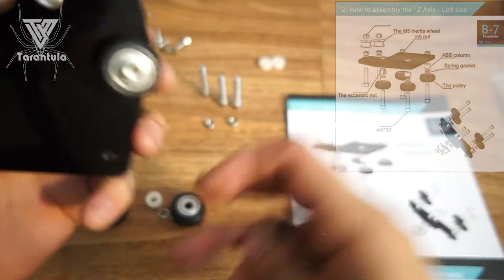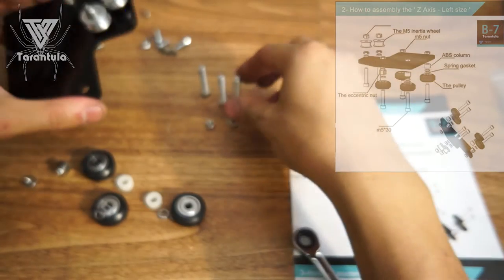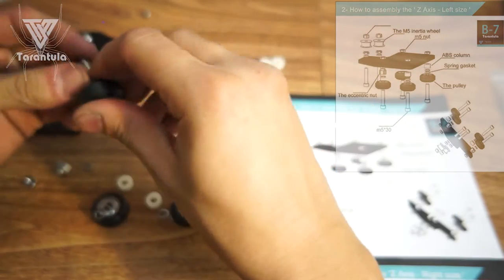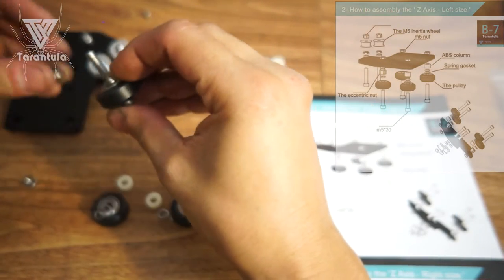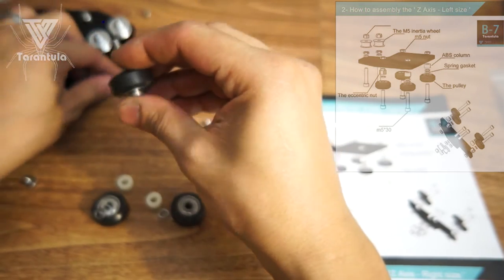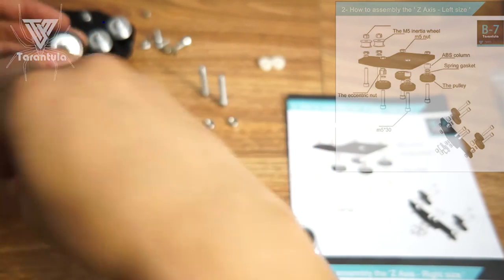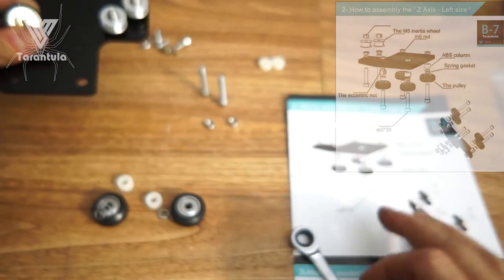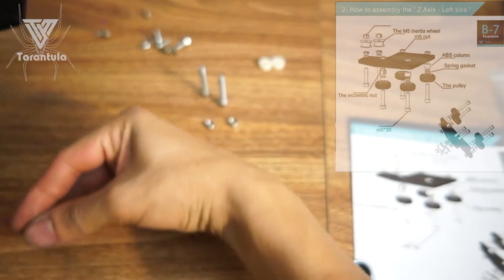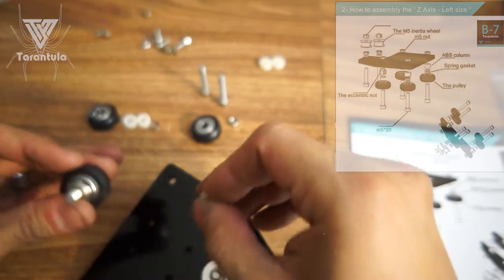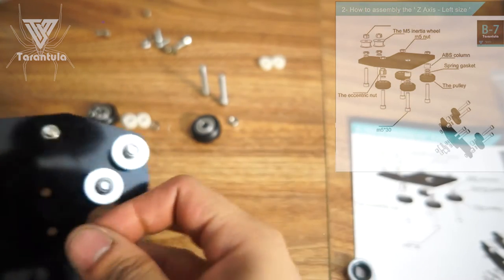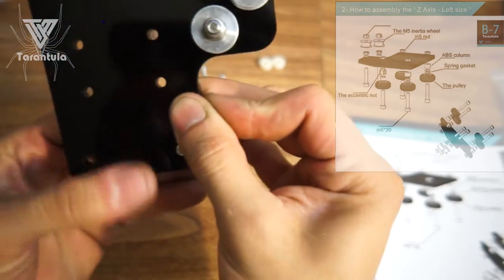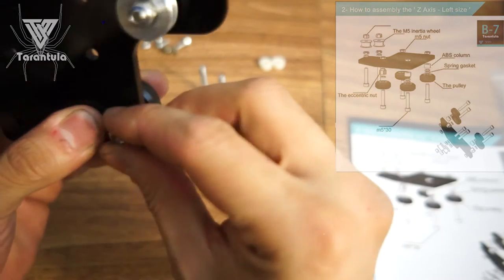Let's do the next one. Long bolt, bearing, spring washer, eccentric nut, oops, eccentric nut, and the bolt here. Move those ones out of the way, those ones are next. And again through the big hole right here so that it sits nice and flush.